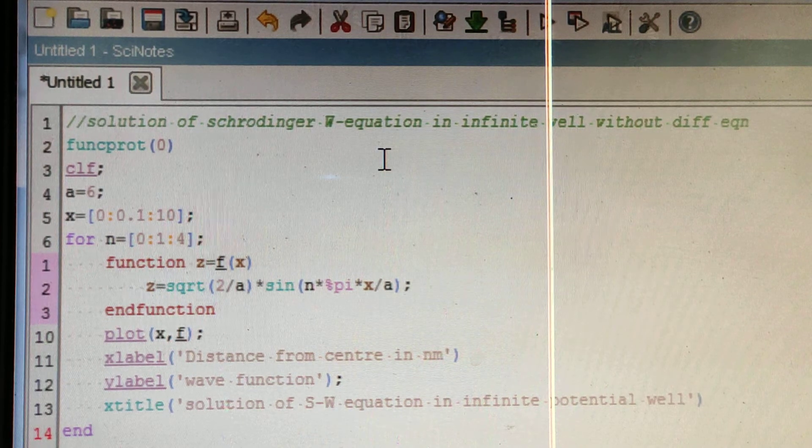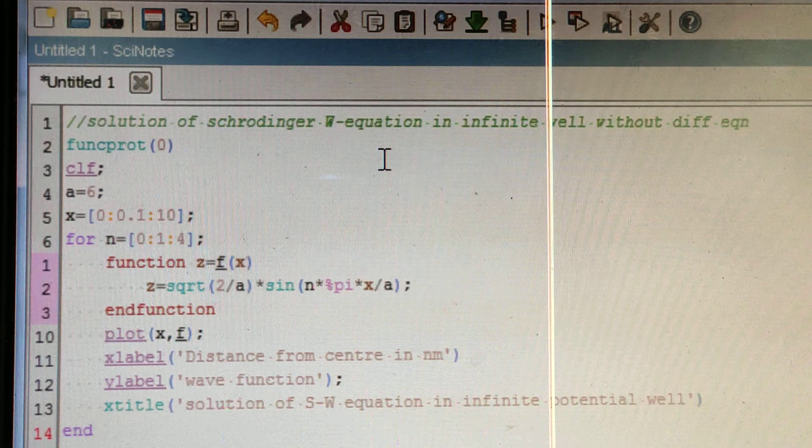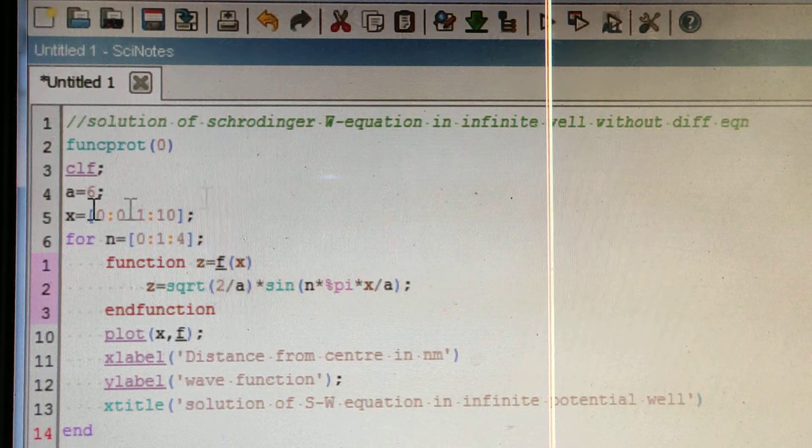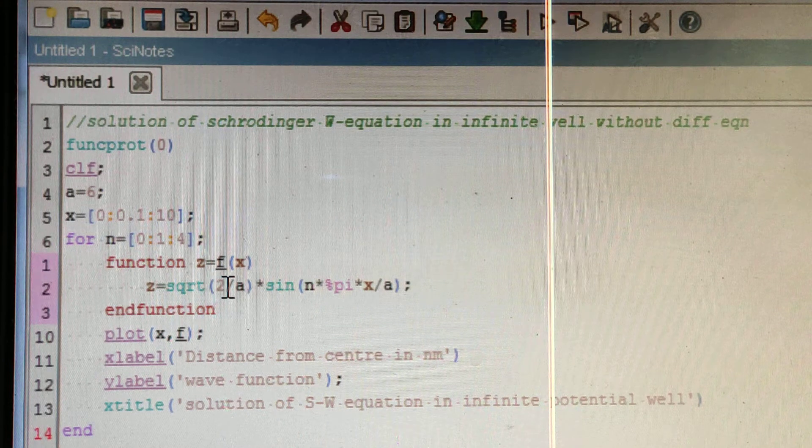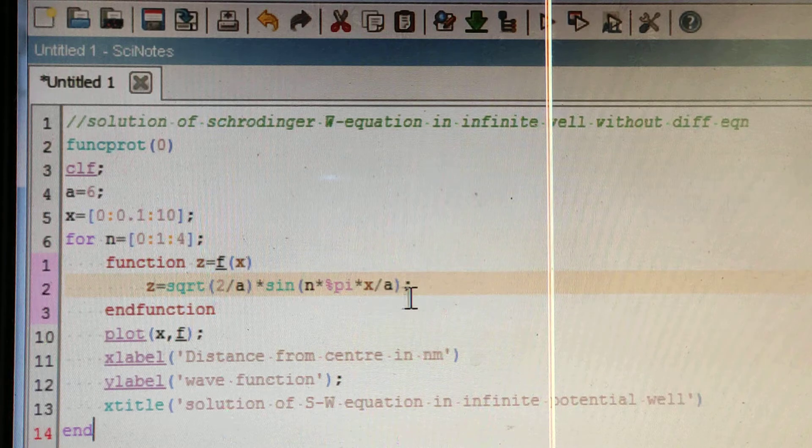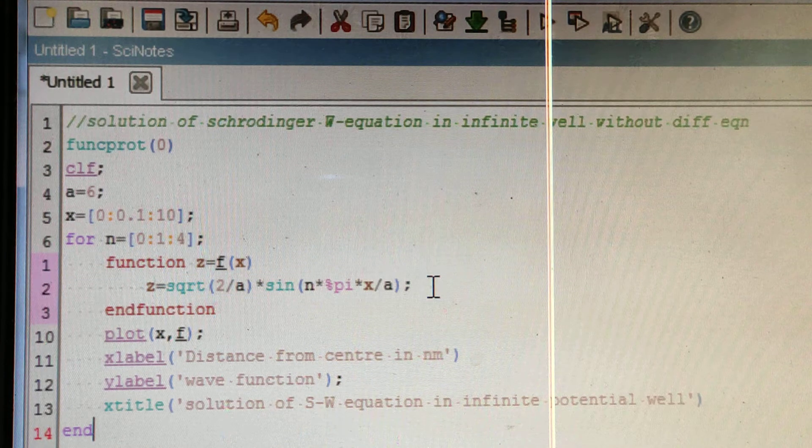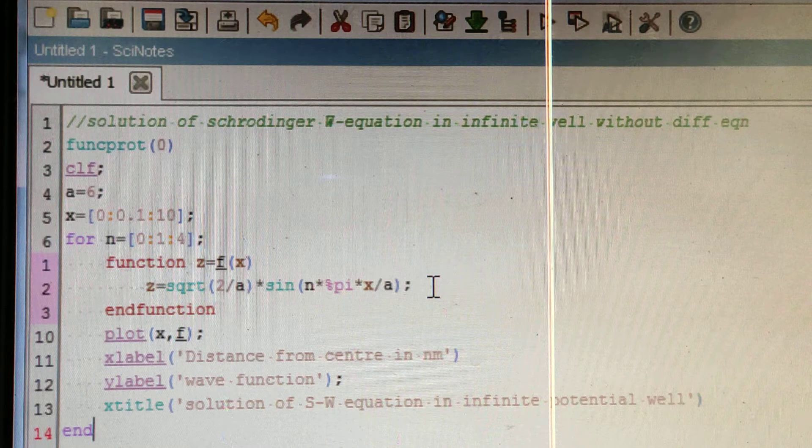The formula for Schrodinger wave equation is psi of x equals square root of 2 by a into sine n pi x by a. So z equals square root of 2 by a into sine n pi x by a. This is the Schrodinger wave equation.